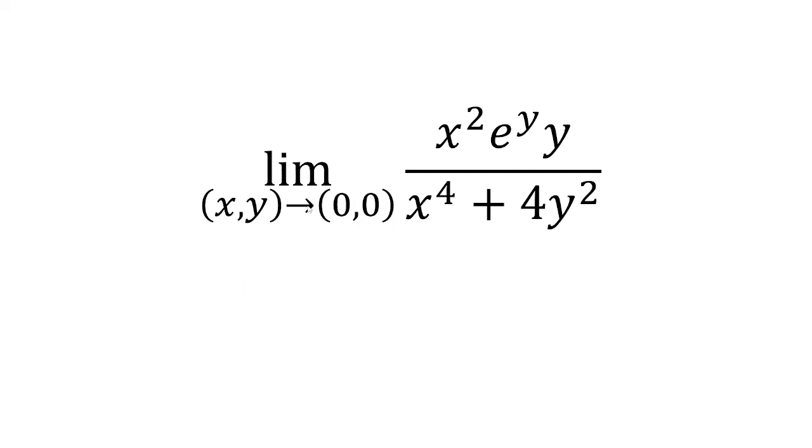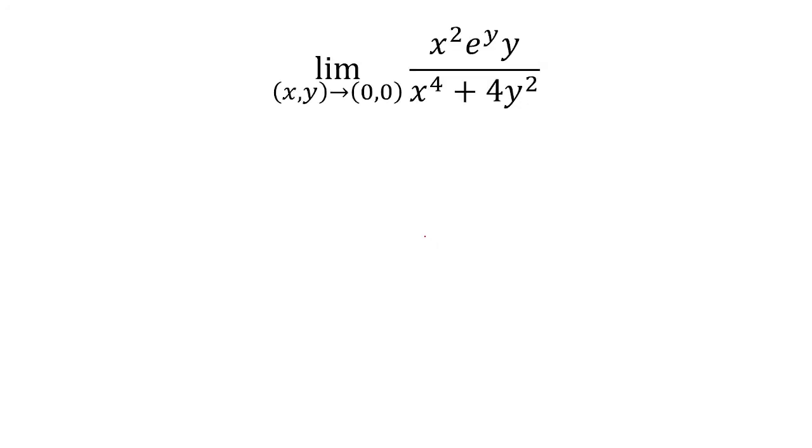In this video, we want to find a limit as x and y approaches 0 of this function. So just by looking at this, it doesn't seem like the limit's going to exist. I get 0 over 0, and there's no good way of factoring and canceling things out.